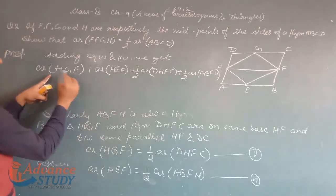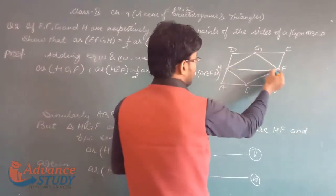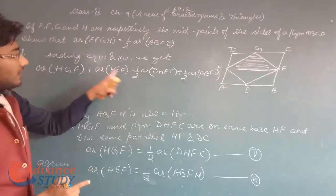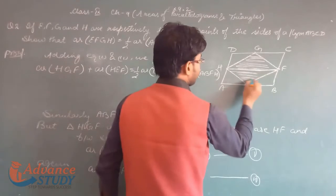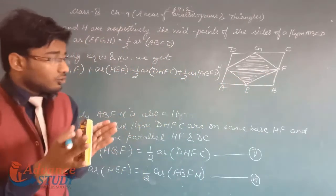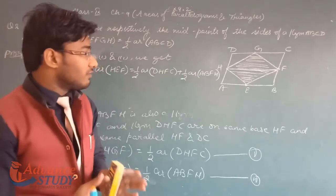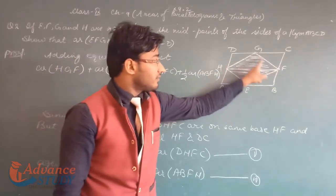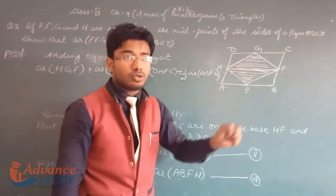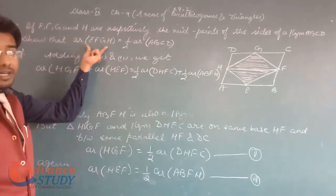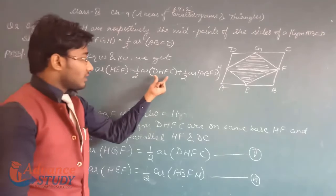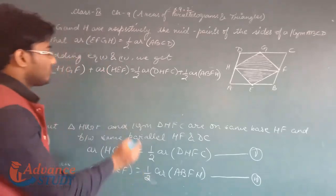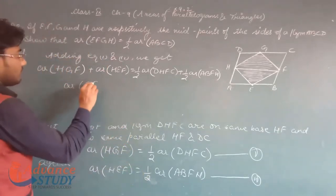Area of HGF is this region, and area of HEF is this region. When we add both these areas, the figure we get is EFGH. So the left-hand side becomes area of EFGH.